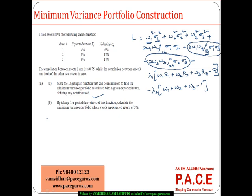So L is: sigma 1 squared is 6, so that is 36 — giving 36W1 squared — plus sigma 2 squared, 12 squared is 144W2 squared, plus sigma 3 squared giving 324W3 squared. Plus 2 times correlation between 1 and 2 — which is 0.75 — that is 1.5 times sigma 1 times sigma 2, 12 times 6 times 1.5 equals 108, giving 108W1W2. The cross terms with correlation 0 vanish, so I have minus lambda 1 times the return expression.